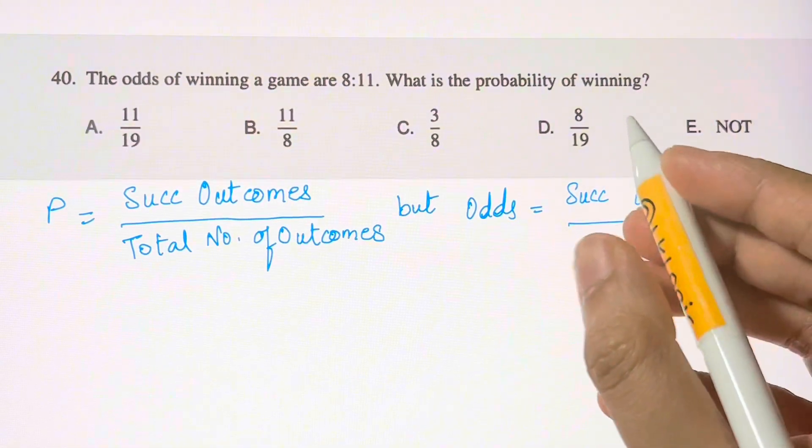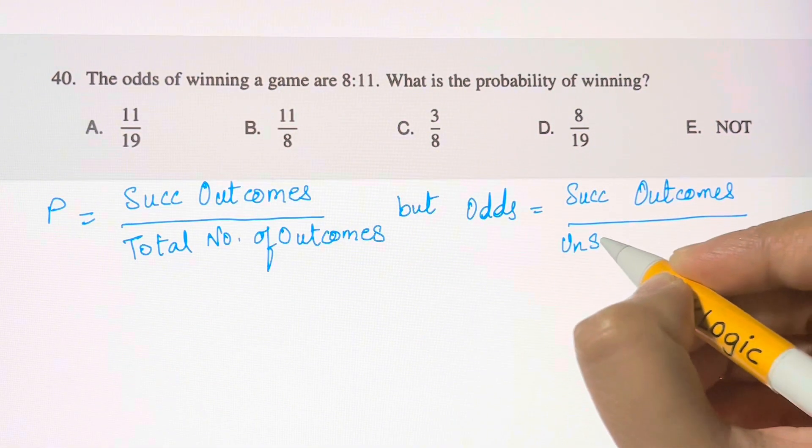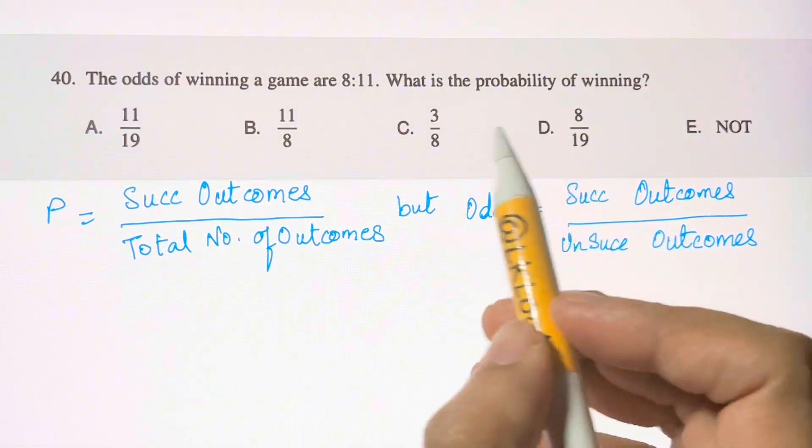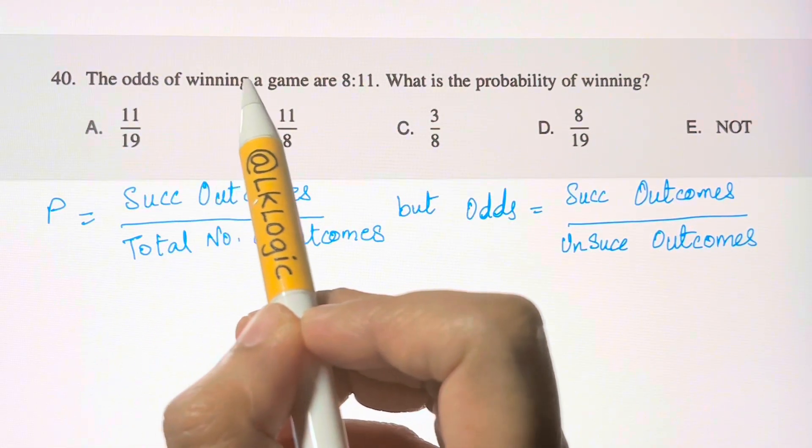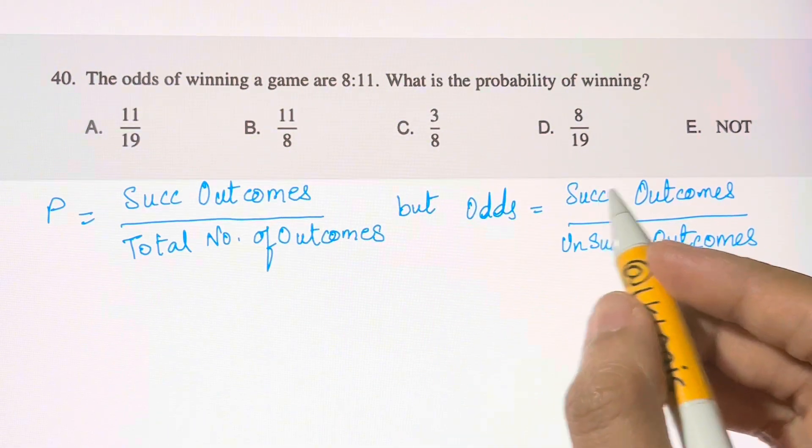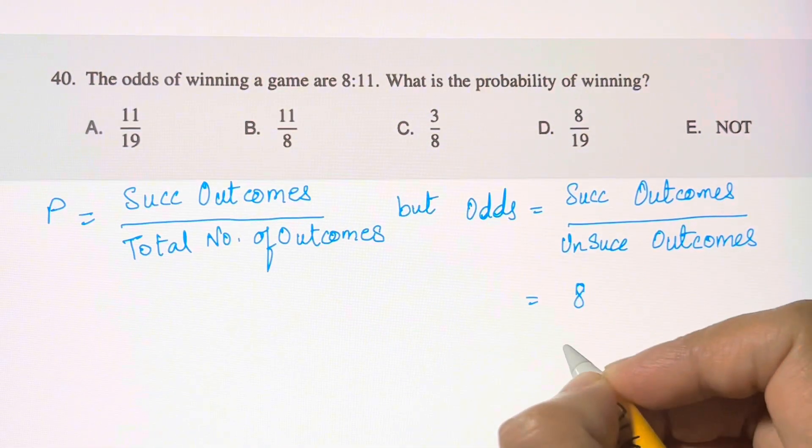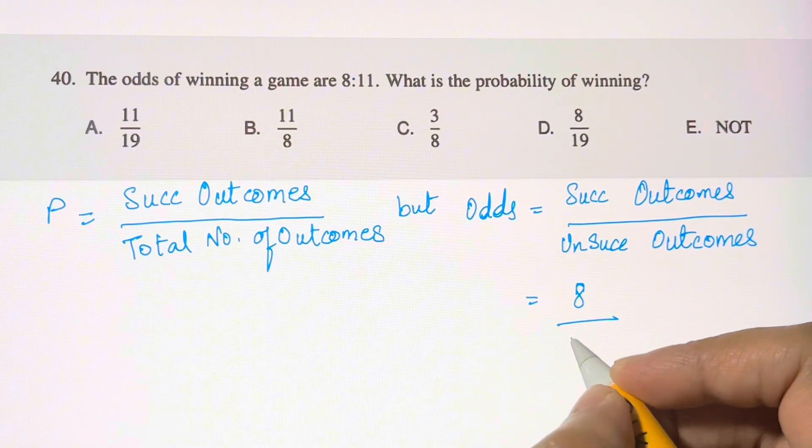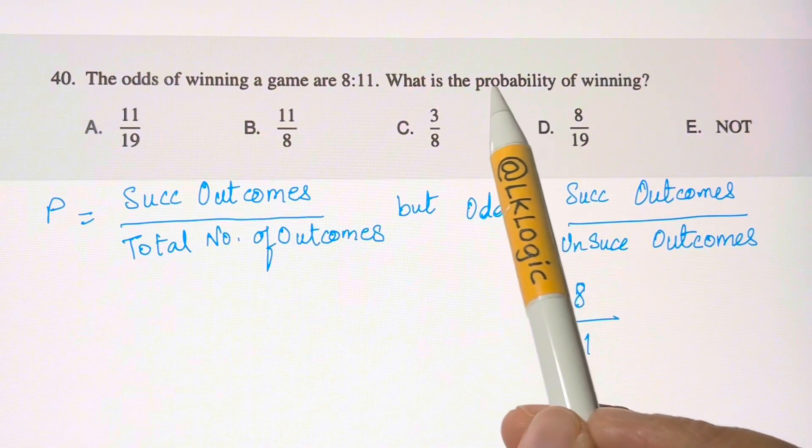So here we have been given the odds of winning a game are 8 to 11. Your successful outcomes is 8, unsuccessful is 11, and you need to find the probability of winning.